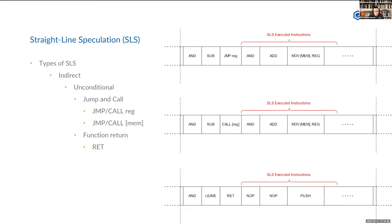So far we know SLS can occur on indirect unconditional jumps, calls, and RET instructions. The diagrams on screen show a decoded instruction block consisting of x86 instructions the front end is operating on, each with one indirect unconditional branch somewhere in it. According to the SLS definition, the instructions following that branch can be executed speculatively under SLS.